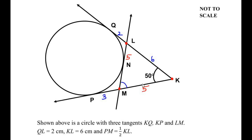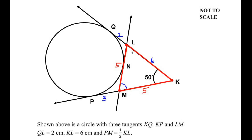Now that we have the side lengths, let us consider triangle KML. In this triangle, side MK equals side LM because both are 5 centimeters. Since the two sides are equal, we call it an isosceles triangle. In an isosceles triangle, the base angles are equal, so if angle K is 50 degrees then angle L is also 50 degrees.